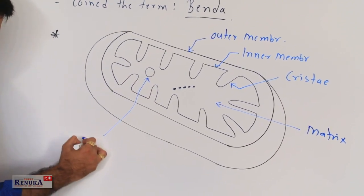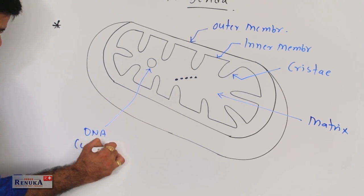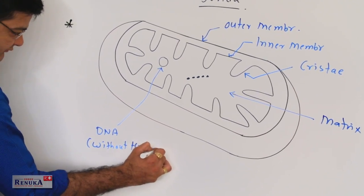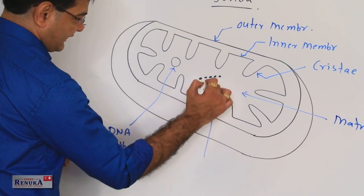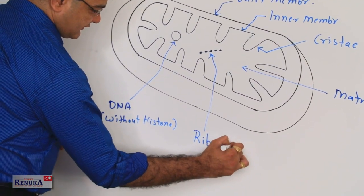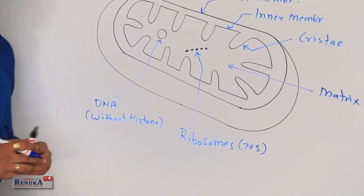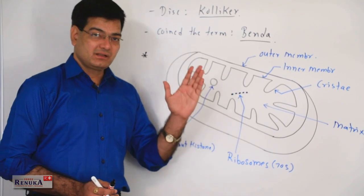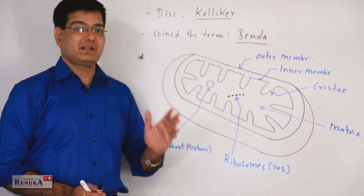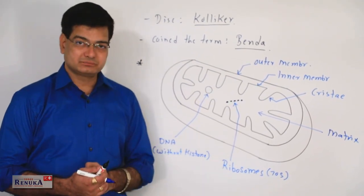The DNA here is without histone. The ribosomes found are of the 70S type. Name the eukaryotic cell organelle having a prokaryotic kind of ribosome — the answer is mitochondria.